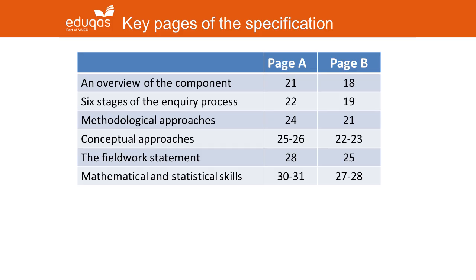This slide shows the pages on which you'll find the critical information in each of the specifications. Component 3 is common across both specifications, so it doesn't really matter which specification you pick up as long as you've got the right page number in front of you.